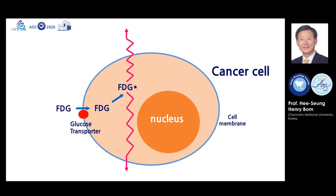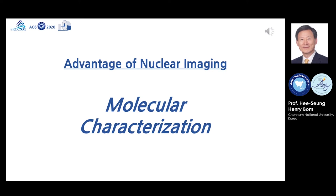We can detect the radiation by using an imaging machine called positron emission tomography, or PET. The advantage of nuclear imaging over other imaging modalities such as radiograph, CT, or ultrasound is that we can characterize the tissues in the living body. In other words, we do molecular characterization by nuclear imaging. We do not say how big it is; rather, we say how fast it grows or how actively it metabolizes.